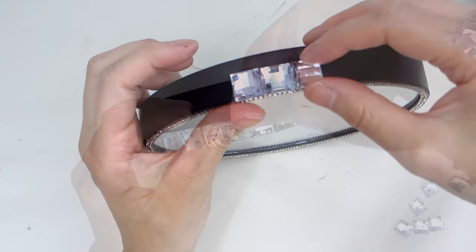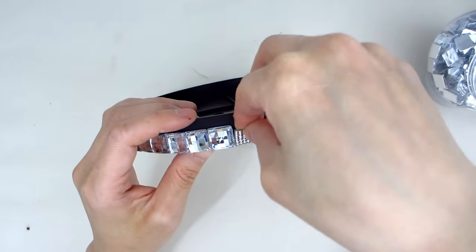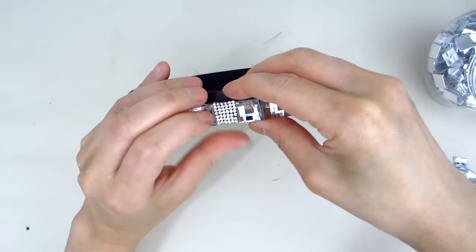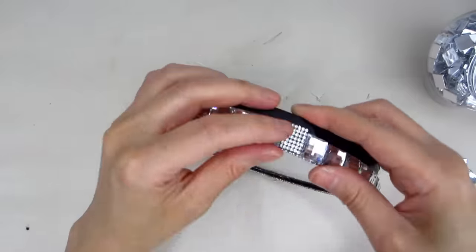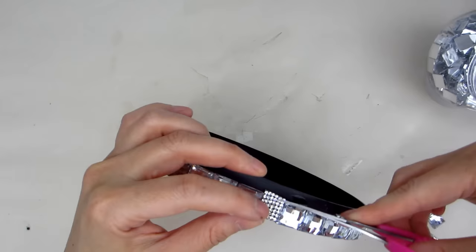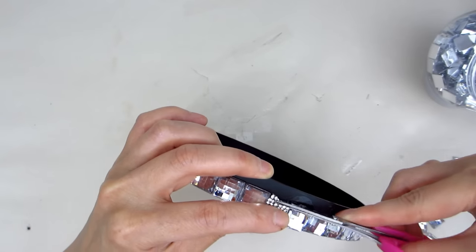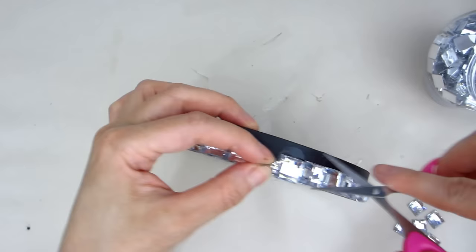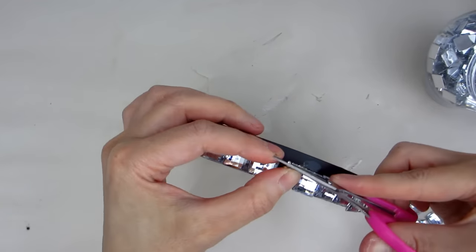And I also prefer tacky glue for some of my crafts because when the glue dries, it doesn't leave clumps like hot glue does sometimes. I'm also adding another strip of rhinestone ribbon right below the gems, and there will be a strip right in between the gems that have a gap.